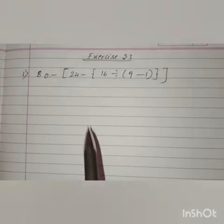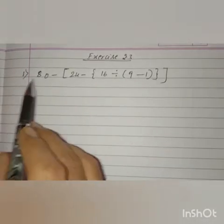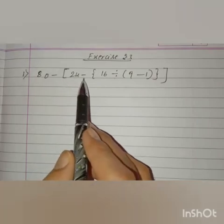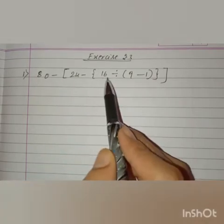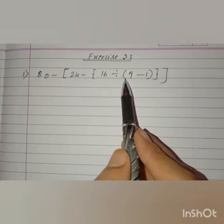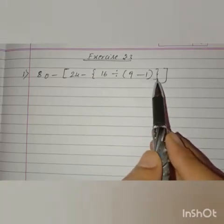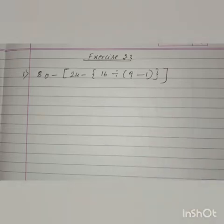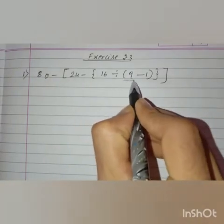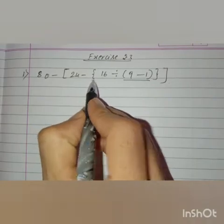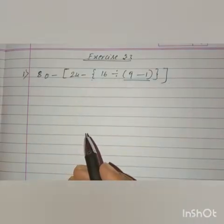The next question is from Exercise 2.3, Question 1: 80 minus big bracket open 24 minus curly bracket open 16 divided by common bracket open 9 minus 1 common bracket close curly bracket close big bracket close. Here we have to remove first the common bracket, or normal bracket. After that we have to remove the curly bracket or flower bracket, then last we have to remove the big bracket.